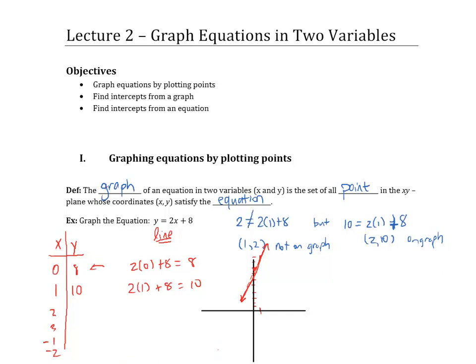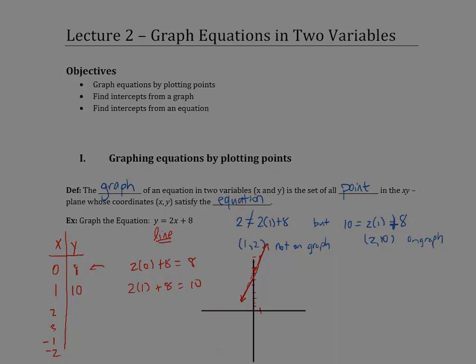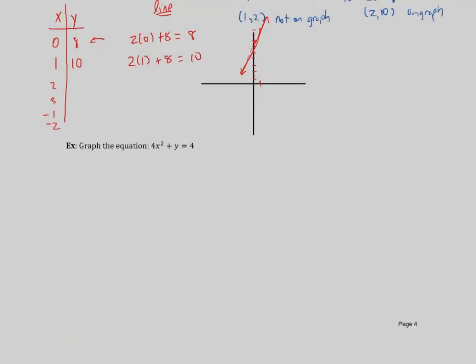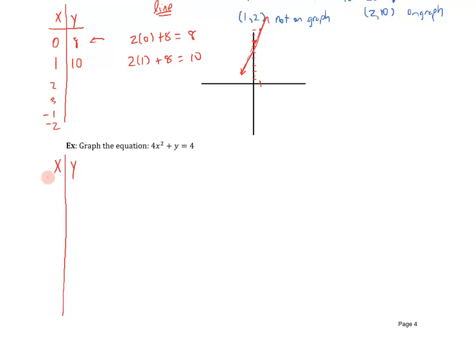What happens if it's not a line? What do we need to do then? In this problem, we are asked to graph 4x squared plus y equals 4. I'm going to do the same thing as before. I'm going to start with a value table and plug in numbers. But this time, I want to plug in a few more numbers than just 2 because of the square, this is no longer just a line. It's easier to use this if I solve for y first. Move the 4x squared to the other side: y equals negative 4x squared plus 4.